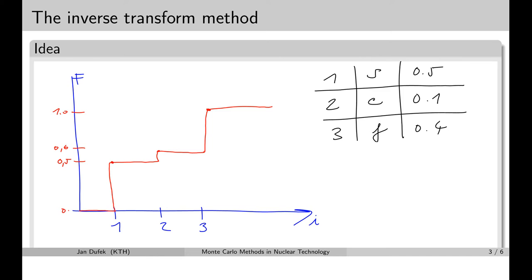The idea of the inverse transform method is fairly simple. It generates random numbers from 0 to 1 using an LCG or any other random number generator, and assigns this value to the vertical axis of the CDF. For instance, we can randomly sample a number such as 0.8, and then find the corresponding value on the horizontal axis. In this case, that would be reaction number 3, which is fission.